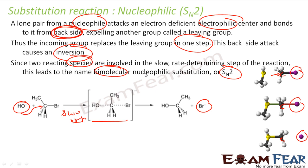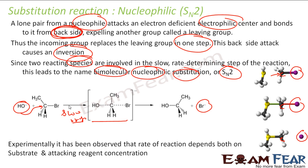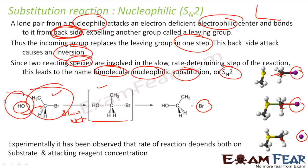It is called SN2 — bimolecular nucleophilic substitution — because it involves two species: the reactant and the reagent (nucleophile). Experimentally, increasing the concentration of the reactant increases the rate; increasing the nucleophile concentration also increases the rate. So the rate of reaction depends both on the reactant and the nucleophile. Since the attack is from the back side, if a stereocenter is present, inversion occurs.